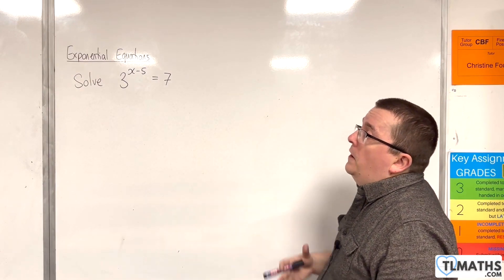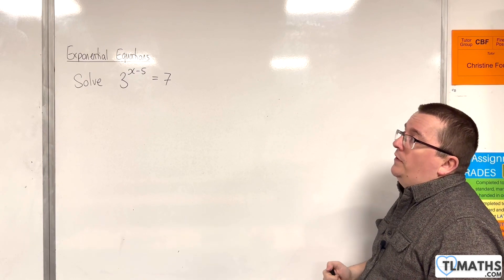In this video, we're going to solve 3 to the power of x minus 5 equals 7.